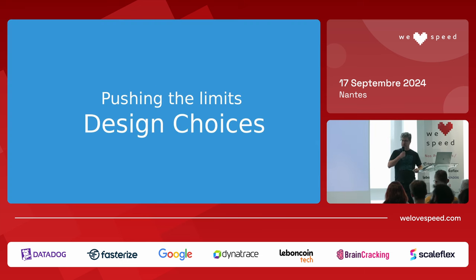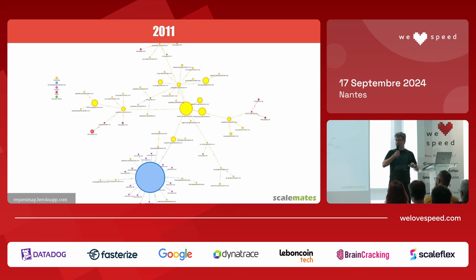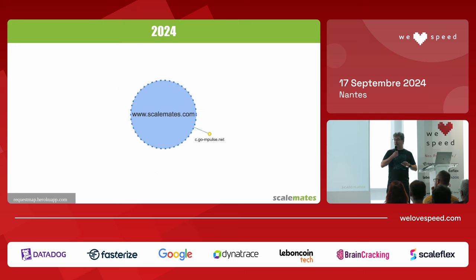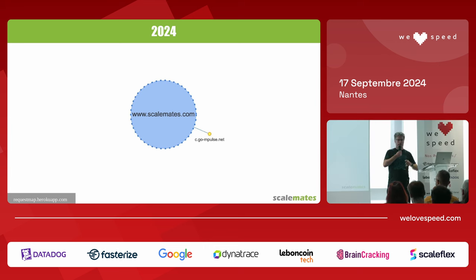Two big blocks here: design choices, then fresh techniques mainly to improve CLS, LCP, and a little bit of INP. Pushing the limits — I made some design choices when I started the website in 2011. Back then I used Google AdSense with plenty of requests to ad servers, fonts, third parties. That was basically crazy. Now 13 years later, with GDPR, rather than having all these third parties destroy performance, I decided to go for a fully in-house solution based on Revive, an open source ad server. Everything is on the same domain, which gives great performance benefits.